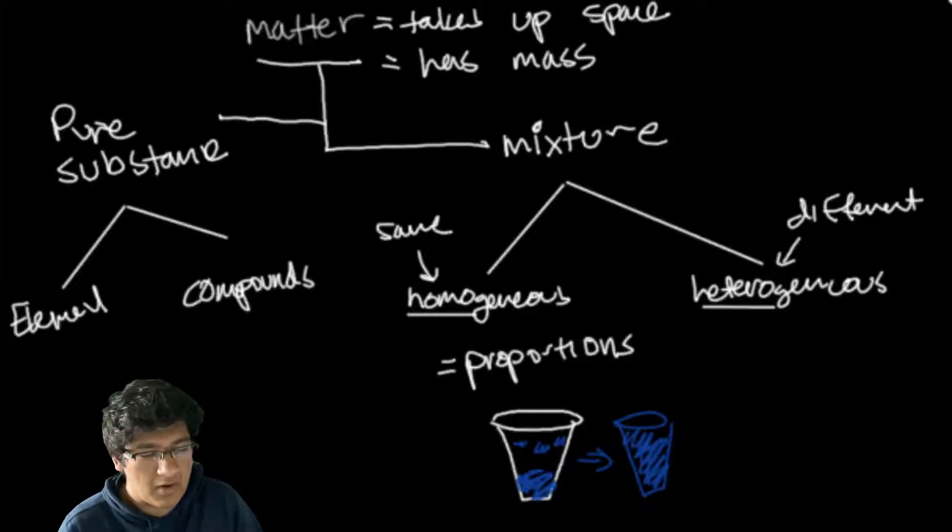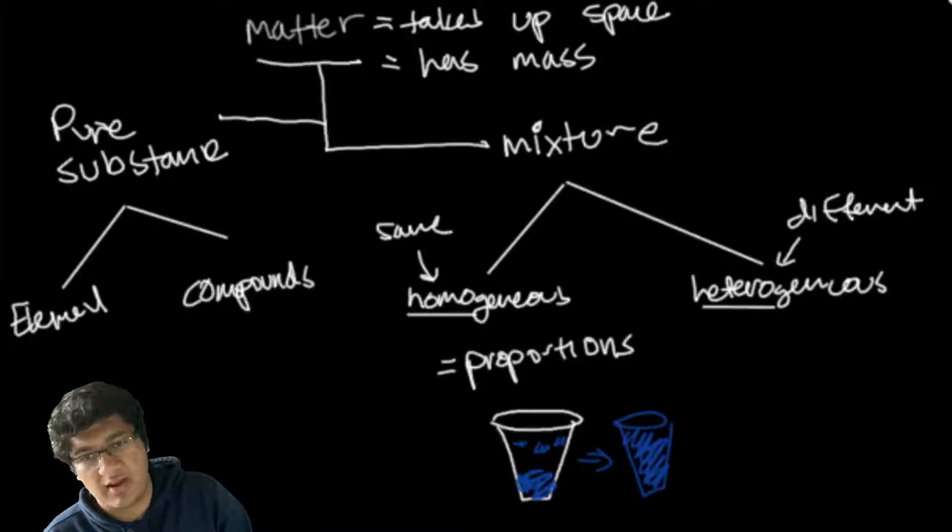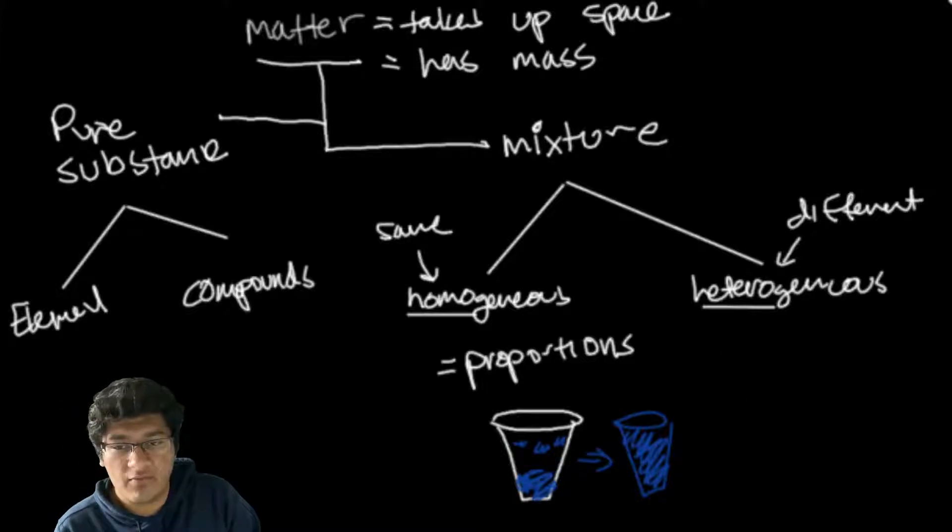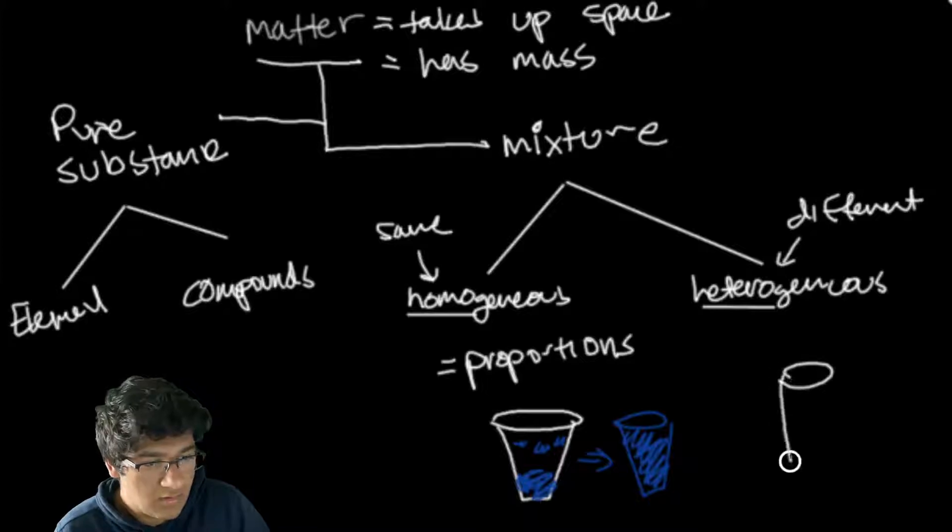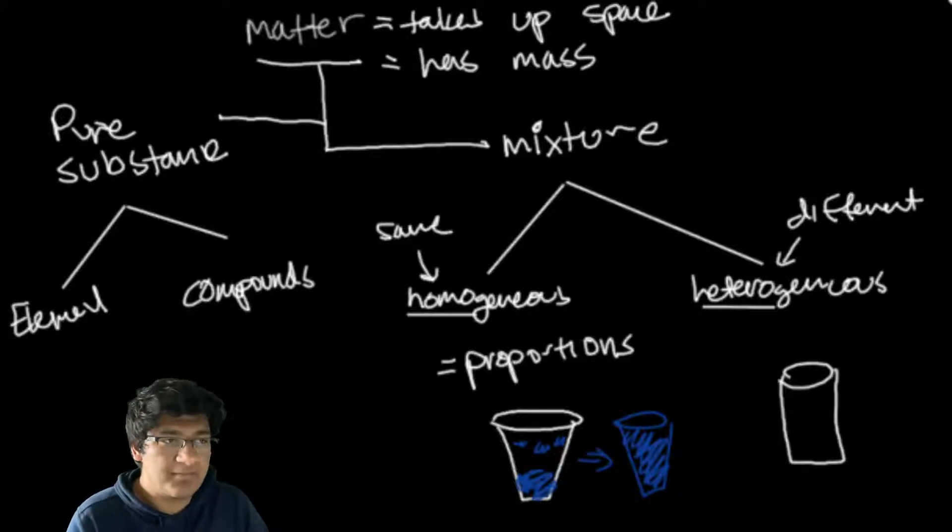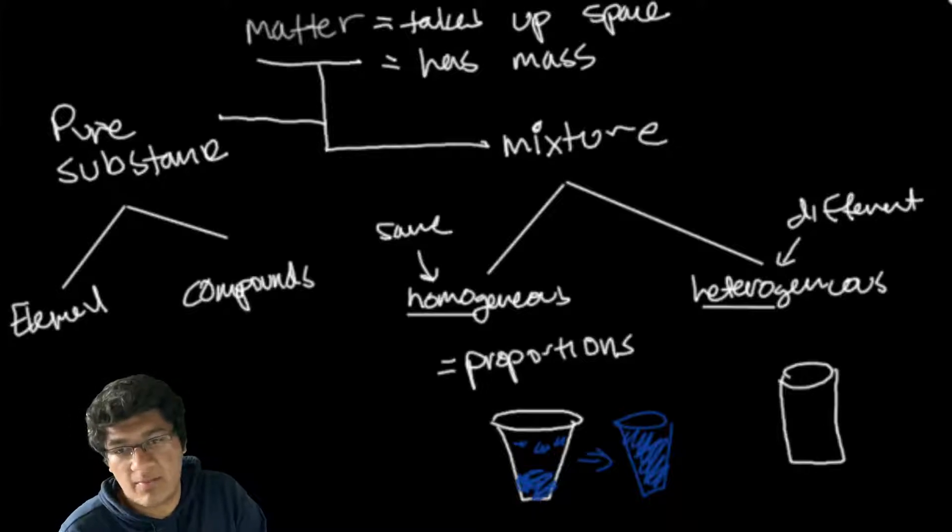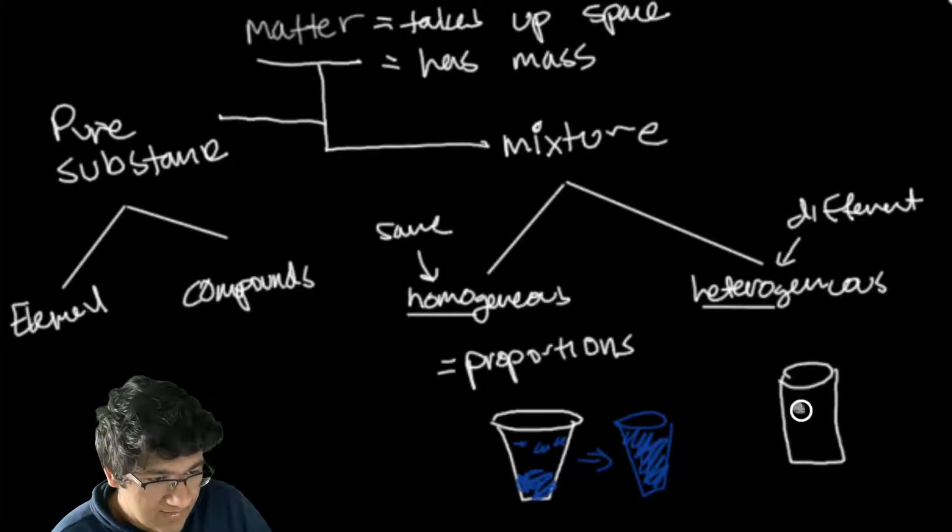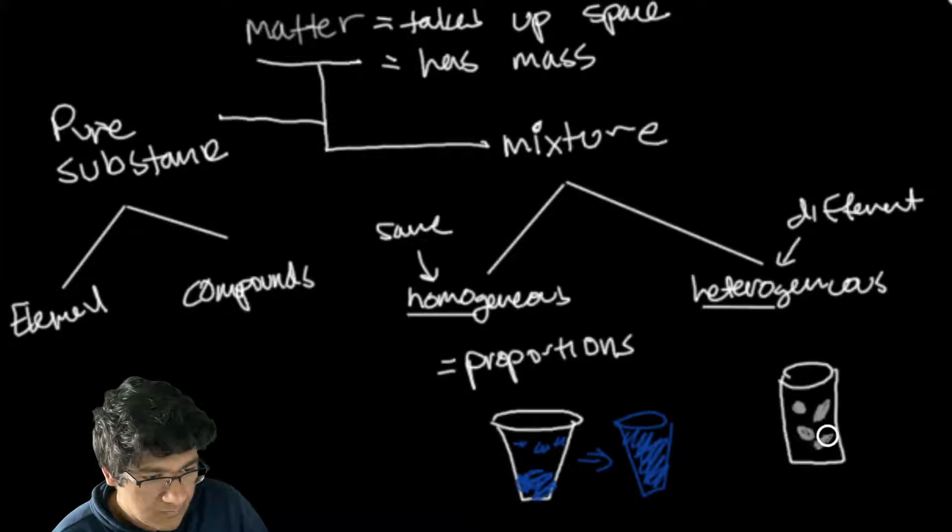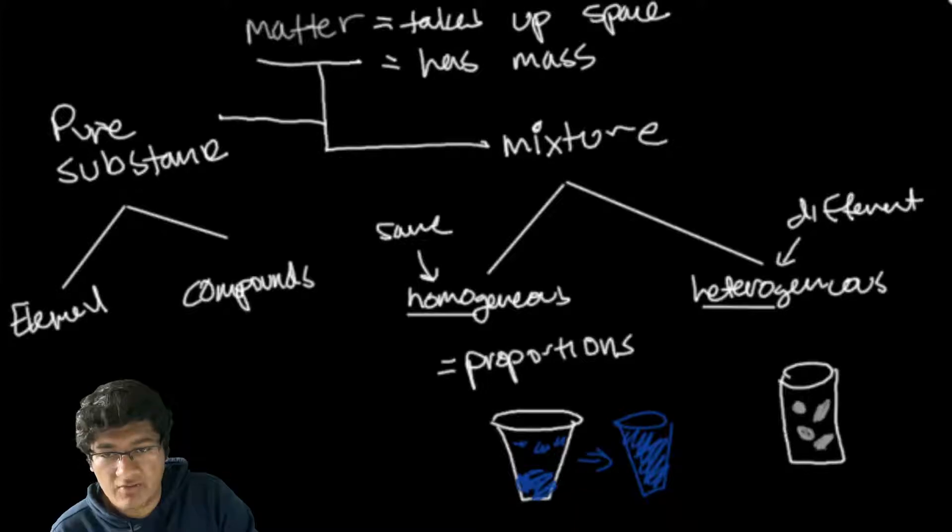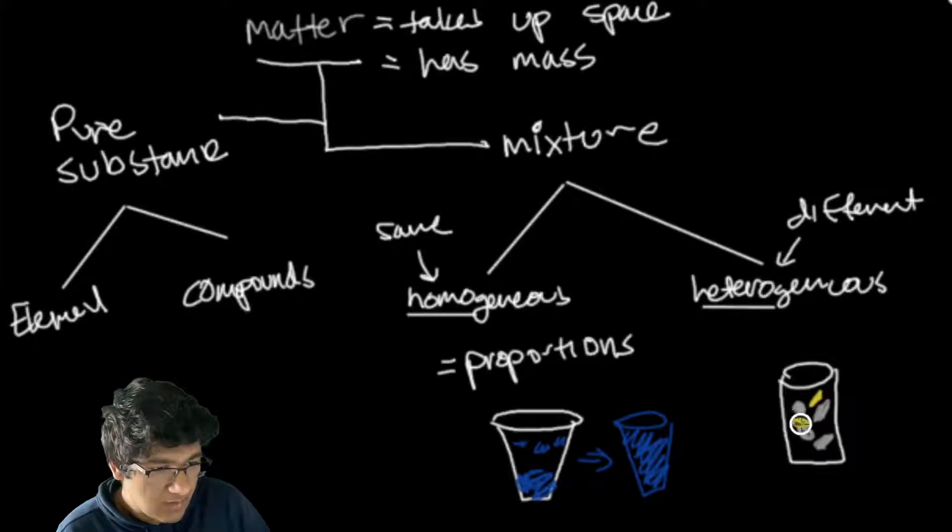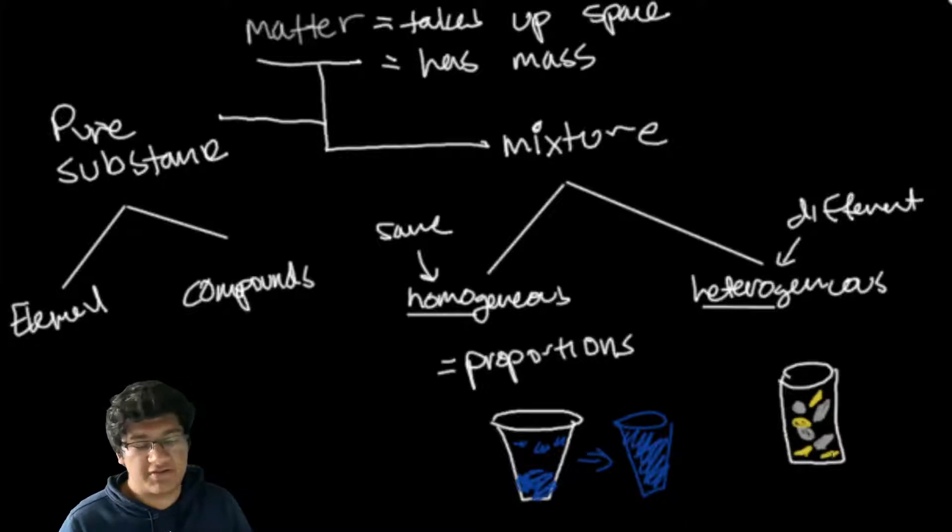Heterogeneous, on the other hand, is when you can visibly see different parts of your mixture. Say I had a jar mixed with metal and pebbles - silver colored metal and chunks of gold which would be yellow. This would be a heterogeneous mixture because you can clearly see the difference between the two.